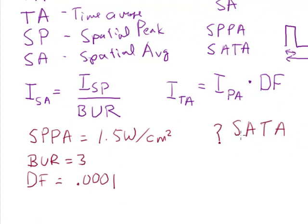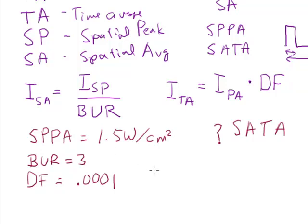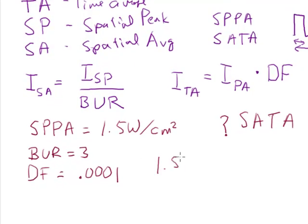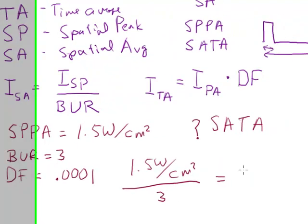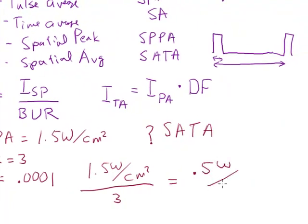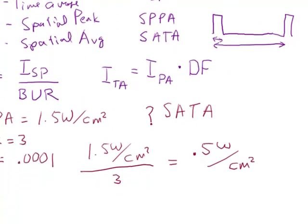Okay, so what would be the SATA intensity of that? So I have my initial intensity of 1.5 watts per square centimeter. I have to divide that by three to get the spatial average. And so that's 0.5 watts per square centimeter.